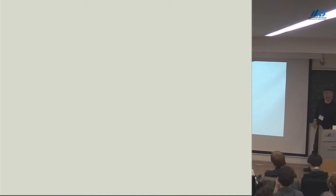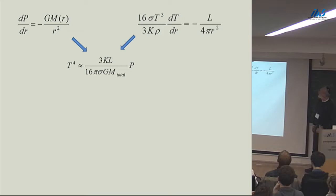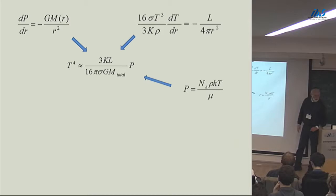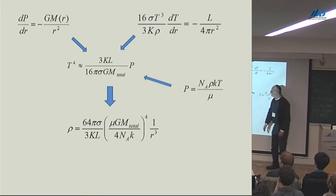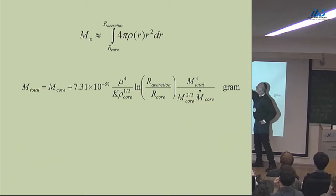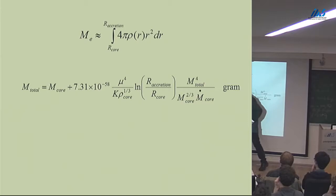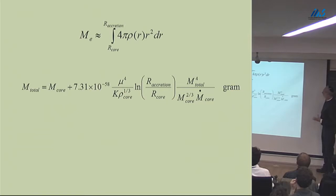Here's a quick review of what Dave just told us. You have the equation of hydrostatic equilibrium, you have the equation telling you what the thermal gradient is, and that gives you a relationship between temperature and pressure. You add in an ideal gas equation of state, and that gives you rho as a function of r. It depends on the opacity and the luminosity. The luminosity you get from the m-dot core — the rate of growth of the core. You can plug all that in and get rho as a function of r.